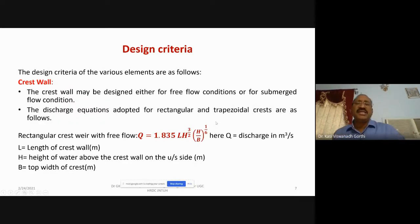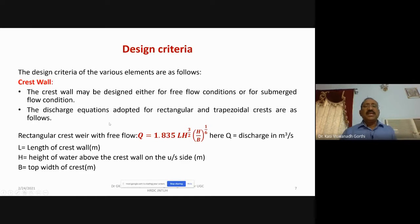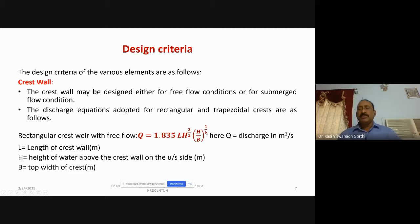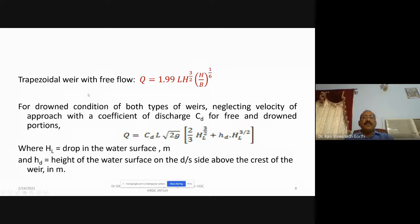The design criteria for various elements of this type of fall are as follows. The crest wall may be designed for free flow or submerged flow conditions, and it should be designed for both. For a rectangular crest with free flow, the discharge Q = 1.835 · L · H^(3/2) · (H/B)^(1/6), where Q is discharge in m³/s, L is crest length, H is head over the sill, and B is top width of the crest. For a trapezoidal weir, Q = 1.99 · L · H^(3/2) · (H/B)^(1/6).